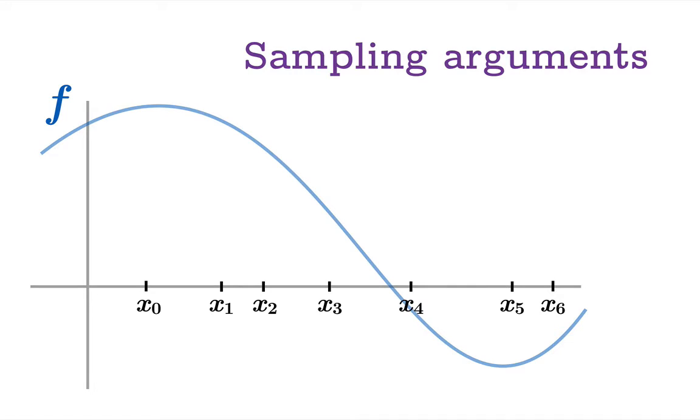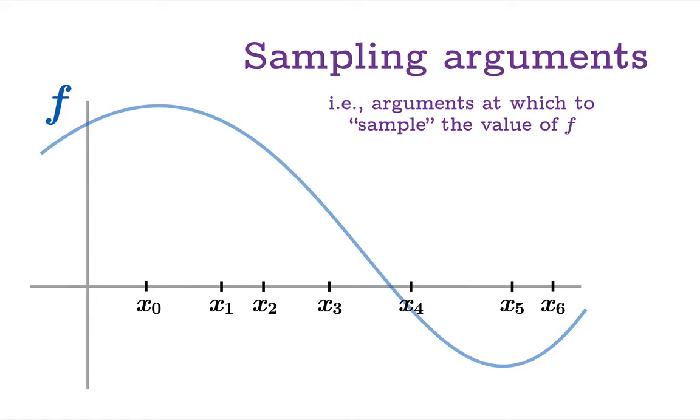Now the next ingredient is what we might call sampling arguments. And what we're going to do is choose one argument from within each subinterval. And this argument we will plug into the function to obtain a height, which we will then use when we calculate areas of boxes. So these are the arguments at which we're going to sample the value of f. Now one of the ground rules is left or right hand endpoints are okay, so within a subinterval we can pick a left or right hand endpoint. So here for example is a typical collection of sampling arguments you might choose for this partition.